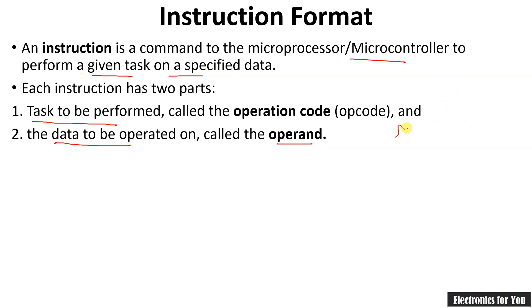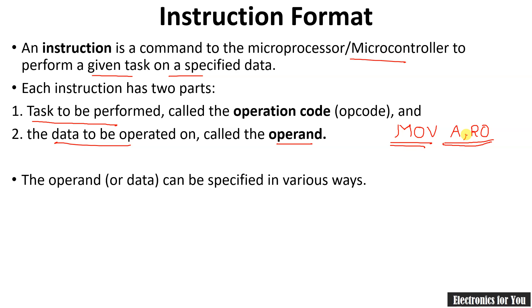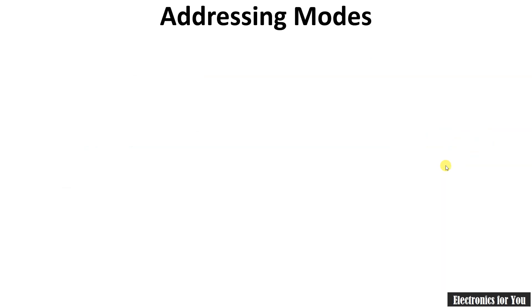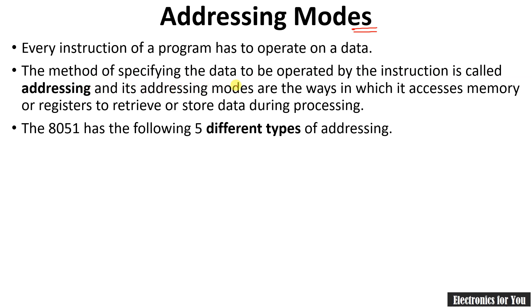For example, if we have an instruction MOV A, R0 — here MOV indicates a copying operation and therefore it is an opcode, whereas A and R0 are the data and therefore known as operands. This operand may be specified in different ways and may be an 8-bit or 16-bit data, an address, a register, or a memory location. In some cases this operand may not exist, but for 8051 it exists in most instructions. The method of specifying the data to be operated by the instruction is called addressing.